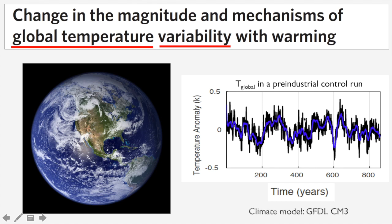This is 900 years of global temperature variability in the GFDL CM3 model, which is the model I will focus on exclusively in this talk. In a pre-industrial control run, there are no changes in the solar constant, well-mixed greenhouse gases, or anthropogenic aerosols. All of the variability emerges spontaneously from the internal dynamics of the ocean, atmosphere, land, and sea ice system.